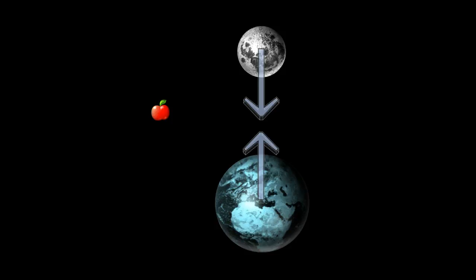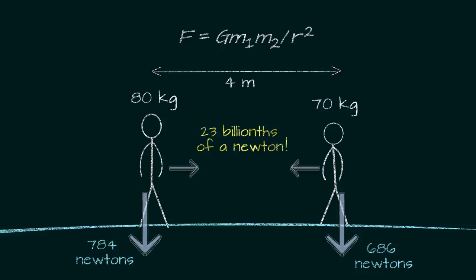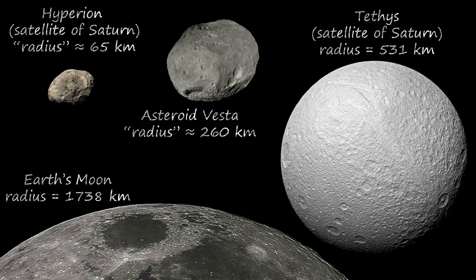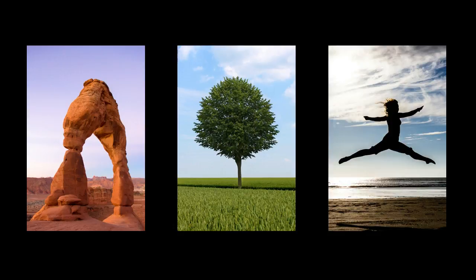Gravity makes every mass in the universe attract every other mass, but it is relatively weak. In everyday life, only the mass of the Earth, taken as a whole, is large enough for its gravity to be easily felt. An asteroid, a satellite, or a planet has to be at least a few hundred kilometers in size for its gravity to hold it together and force it to become more or less spherical. So gravity is unable to explain why relatively small objects, like a rock, a tree, or a human being, keep their shapes.